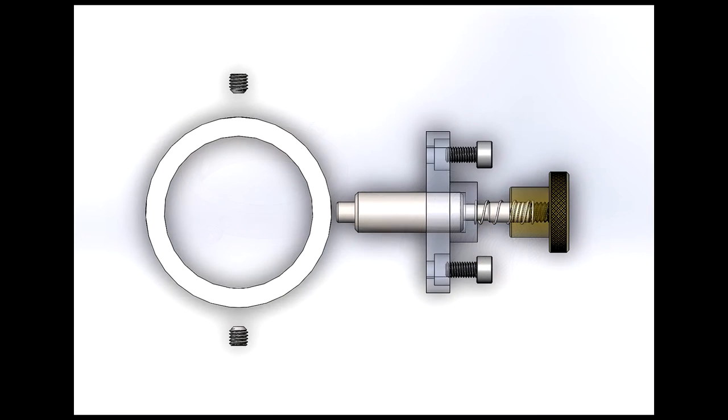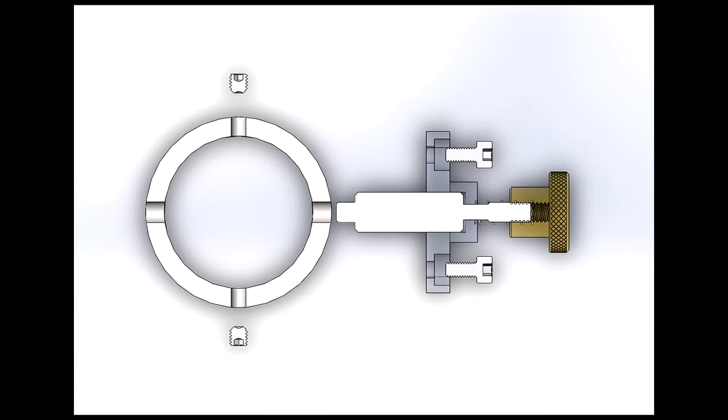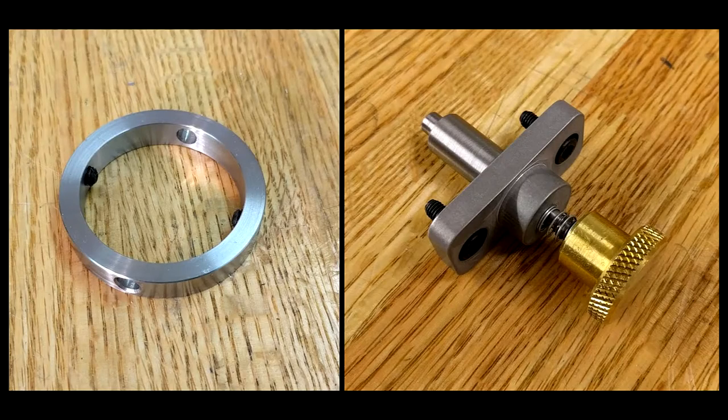The lock consists of a collar that mounts onto the spindle, a pin that slides in and locks the collar in place, and a body that the pin threads into. The body is attached to the side of the milling head.